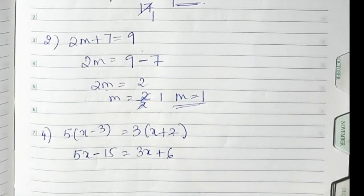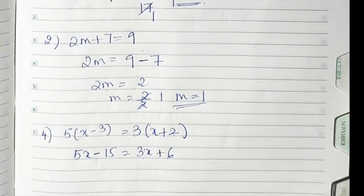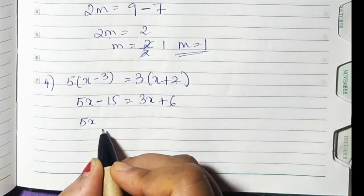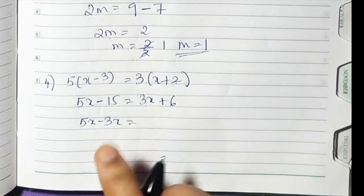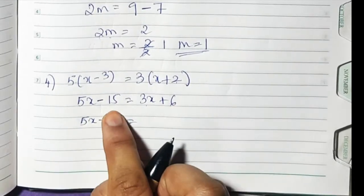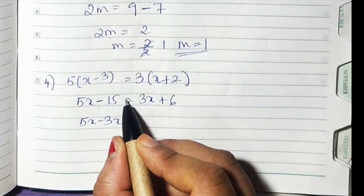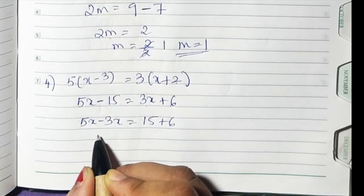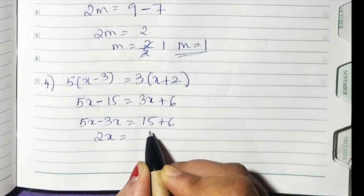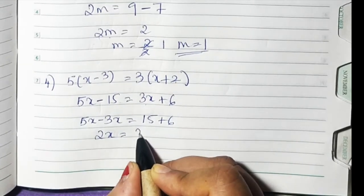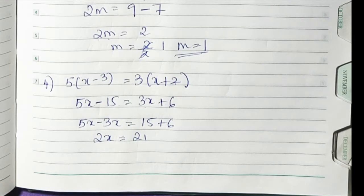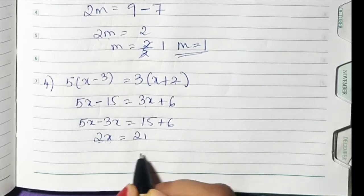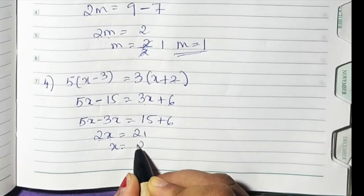Now take the like terms together. Bring 3x to the left side — it becomes minus 3x. Take minus 15 to the other side — it becomes plus 15. So 5x minus 3x is 2x, and 15 plus 6 is 21. To leave x alone, this 2 comes down and becomes divided, so x is equal to 21 upon 2.